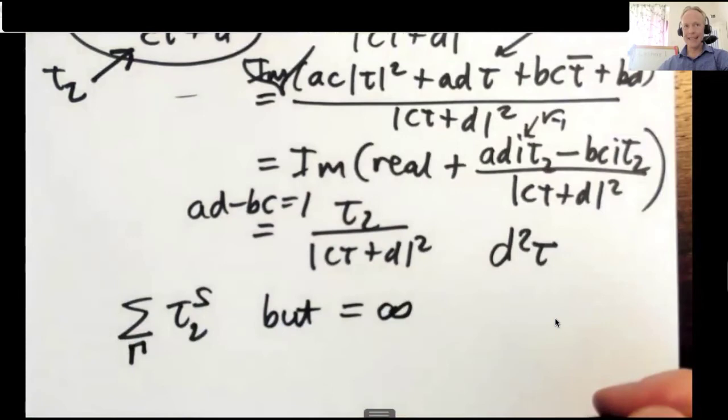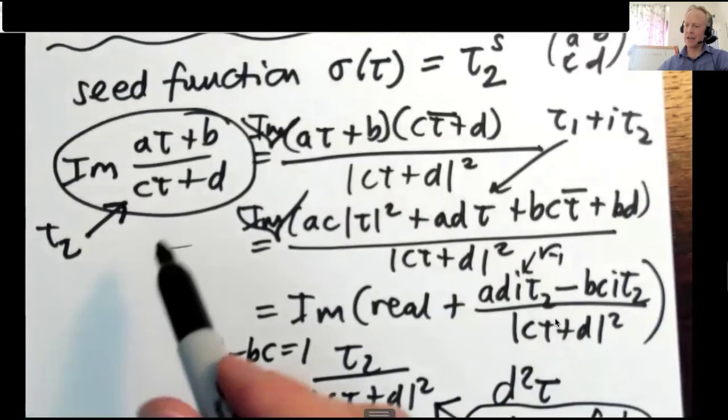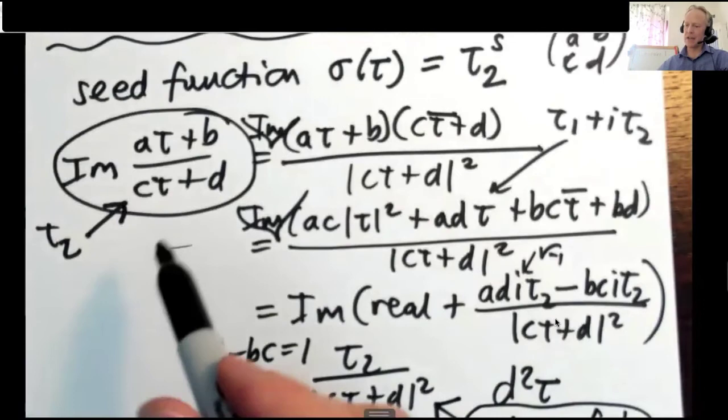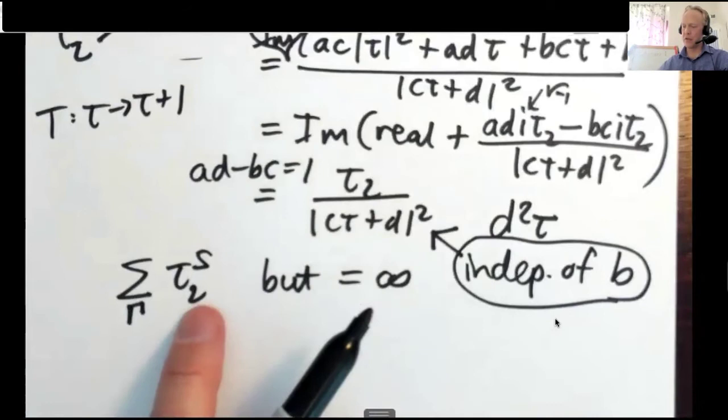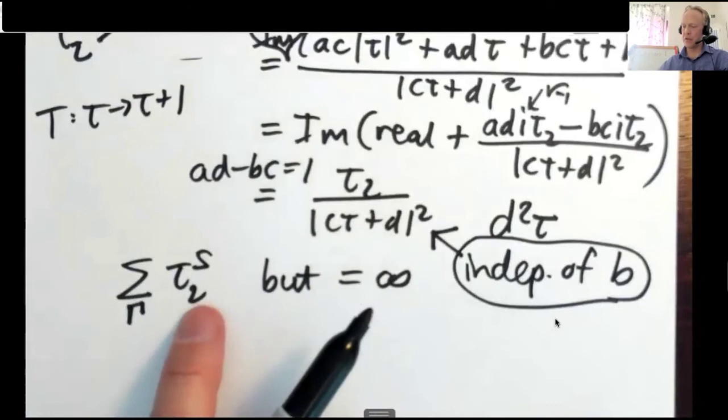It helps us because we can now sum this seed function tau two to the s over in principle now SL to the Z or the modular group. But this doesn't work because it diverges. You can see that because this doesn't depend on, for example, B. The T transformation, we said changes tau by tau plus one. So there's a B is non-zero in the T transformation.